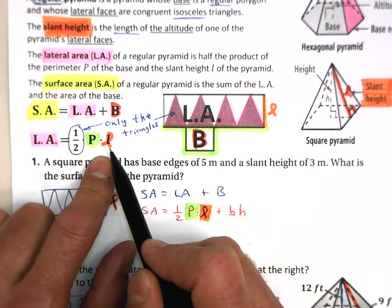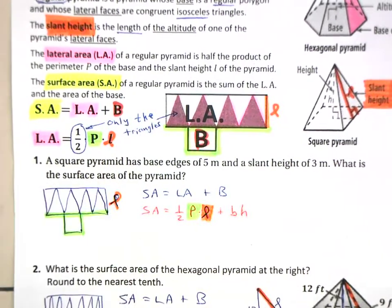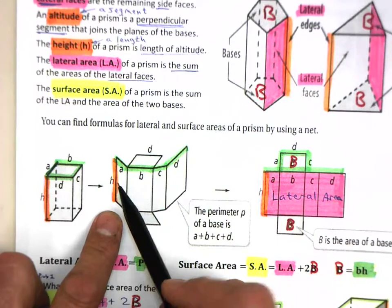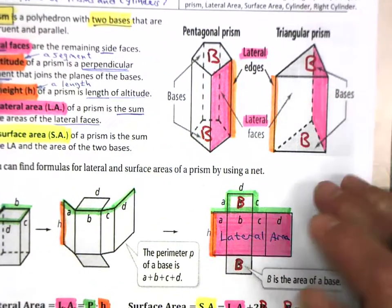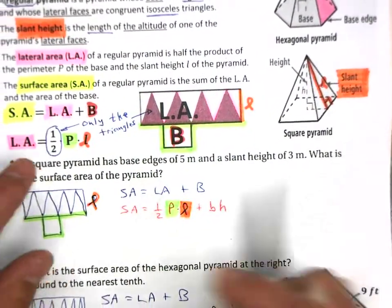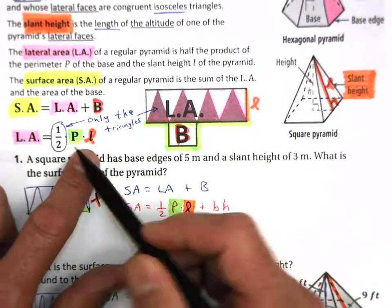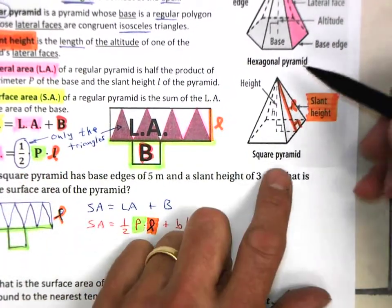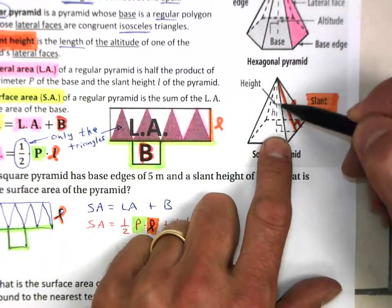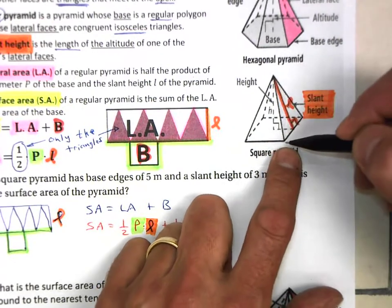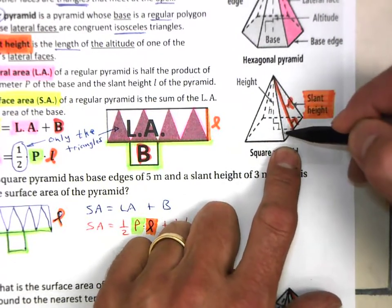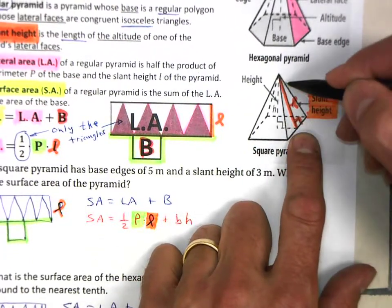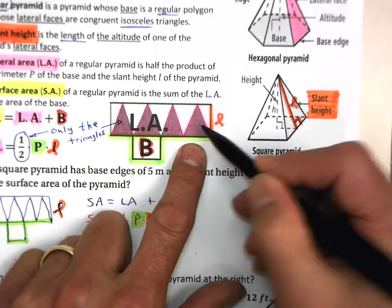Therefore, our lateral area will be one half this length here, which is the perimeter. Remember, that's the same as it was for your prism, the distance around the big base. But the other thing that changes here with pyramids and also with cones, is that this is, instead of it being the height of the prism, the distance, the length here, is the slant height. It is not the height of the pyramid. It is really the height of this triangle.